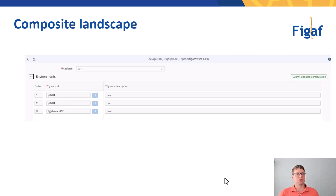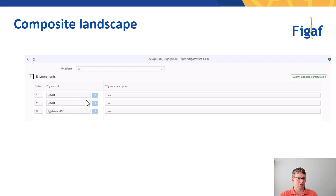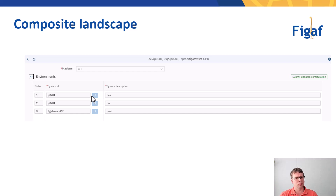We have the term called composite landscape, and this is where we define these things. We set up the objects and then define the landscape object. If you add an item multiple times it will see these as virtual objects by default, and then we can have a secondary setup with this.